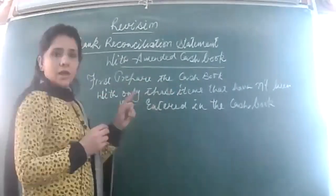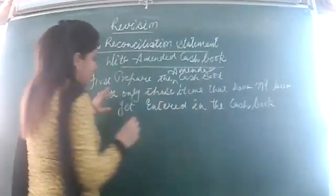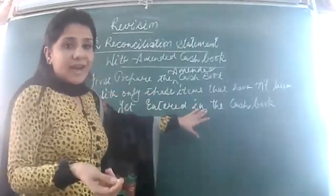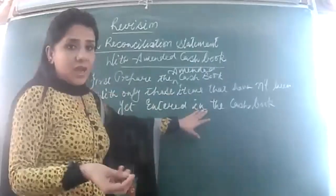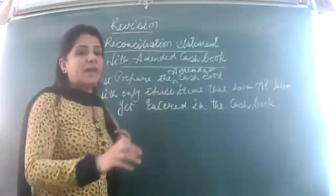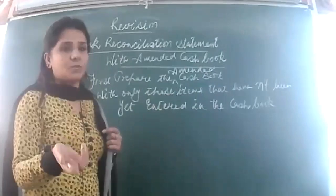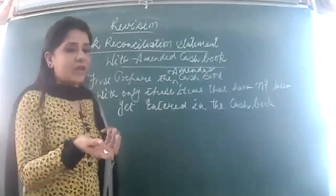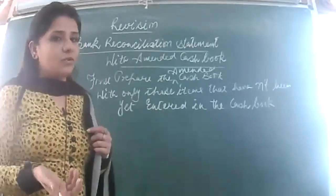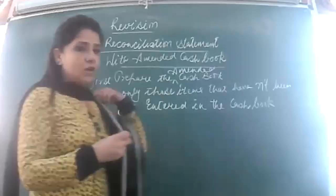First, prepare the amended cash book with only those items that have not yet been entered in the cash book — like a check receipt that has not been entered in the cash book. The cash book you will be preparing is a single column cash book, and in that single column cash book, I will focus on the bank column, because I am going to match my bank column of the cash book with my entries in the passbook. If somebody asks you which column of cash book is to be matched with the passbook, your answer should be: the bank column of the cash book is always to be matched.